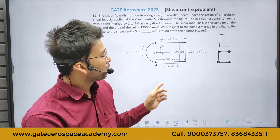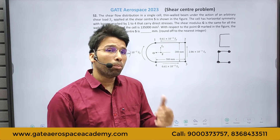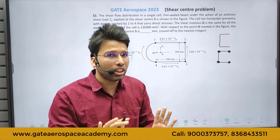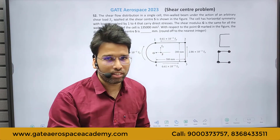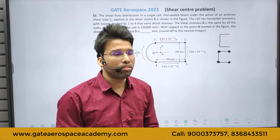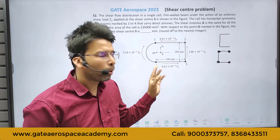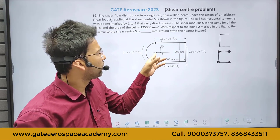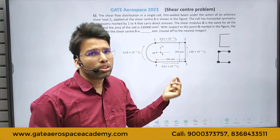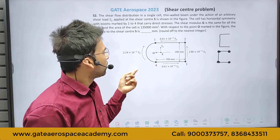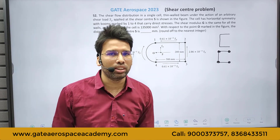They are asking from that last step — when we take moment balance after finding out shear flow — because shear flow they have already given. We just have to take moment balance about the convenient point, the point they have already given. We will take moment about O. So within one or two lines we can solve this.